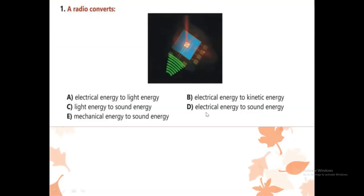Question number 1. A radio converts: A) electrical energy to light energy, B) electrical energy to kinetic energy, C) light energy to sound energy, D) electrical energy to sound energy, E) mechanical energy to sound energy. Before going to find the answer, I just want to tell what is energy and how many types of energy there are.